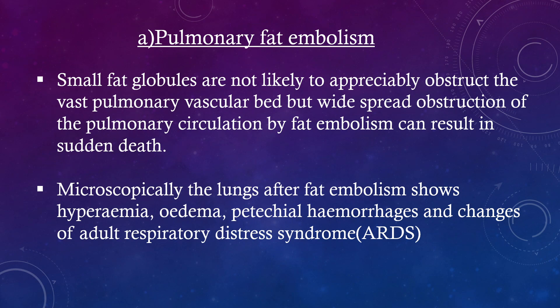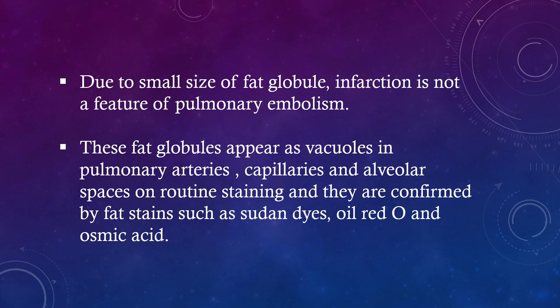Pulmonary Fat Embolism: Small fat globules are not likely to appreciably obstruct the vast pulmonary vascular bed, but widespread obstruction of the pulmonary circulation by fat embolism can result in sudden death. Microscopically, the lungs show hyperemia, edema, petechial hemorrhages, and changes of adult respiratory distress syndrome. Infarction is not a feature of pulmonary fat embolism due to the small size of fat globules. These fat globules appear as vacuoles in pulmonary arteries, capillaries, and alveoli on routine staining, and are confirmed by fat stains such as Sudan dyes, Oil-Red-O, and osmic acid.